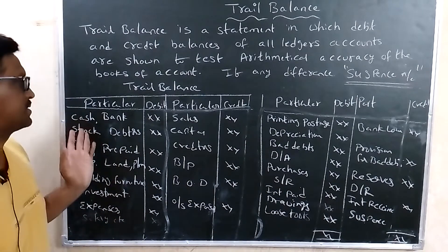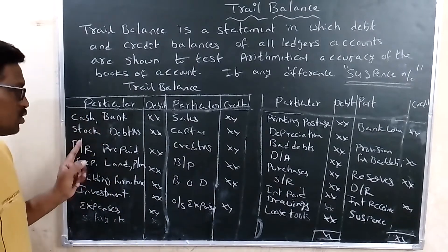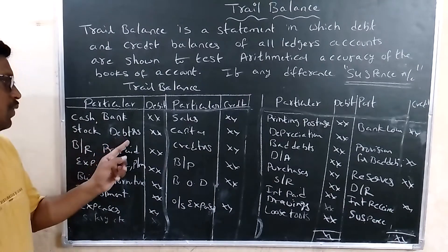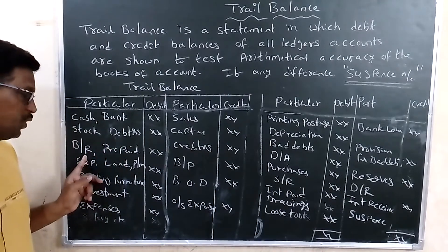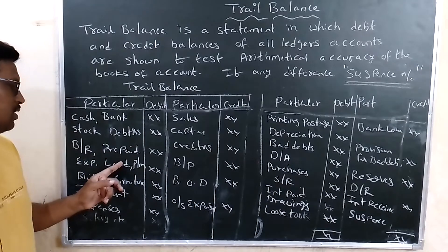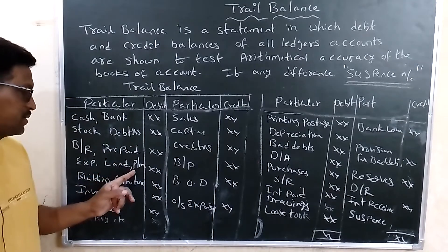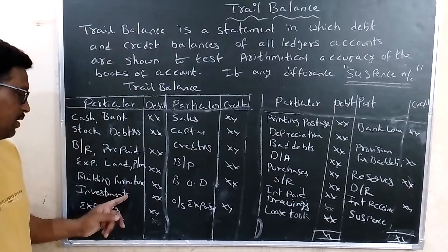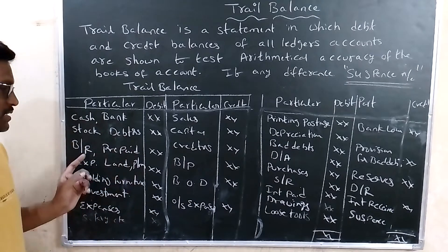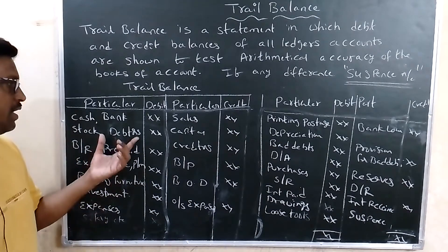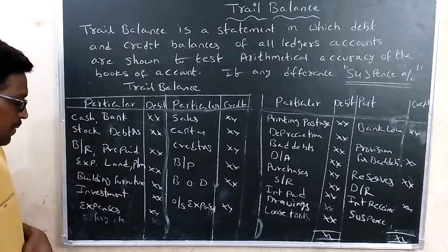Assets include cash in hand, cash at bank, opening stock, debtors, bills receivable, prepaid expenses, land and building, land and machinery, furniture, and investment. These are fixed assets. Assets always show the debit balance in the trial balance.